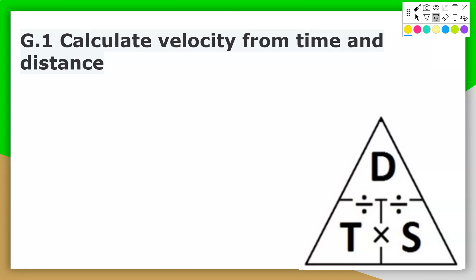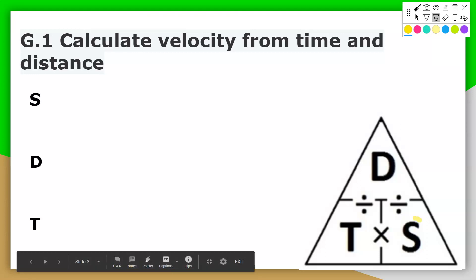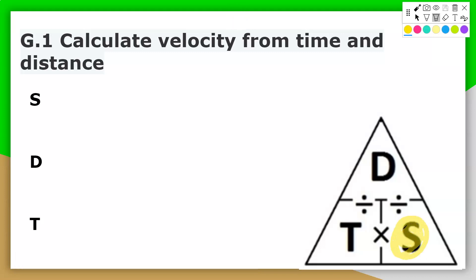In order to figure out what the formula for one of the variables is, if you want to solve for speed, you cover speed. What you'll notice is that you have D and T left over, and that basically tells you the formula for speed, where speed is equal to distance divided by time.